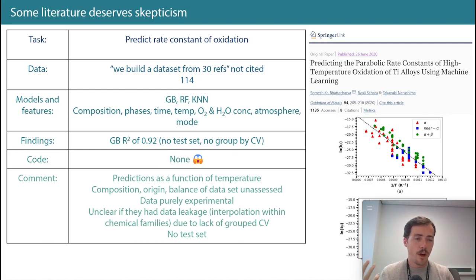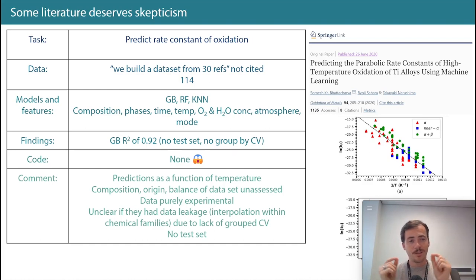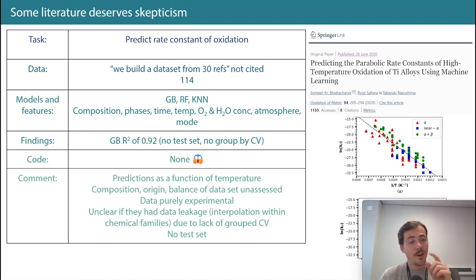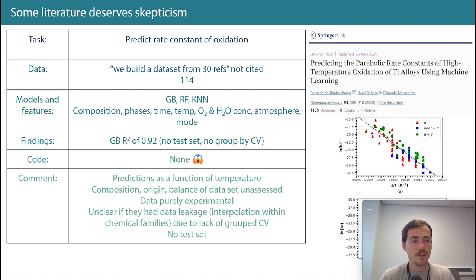That's not what we thought we were building — we thought we were building something that could take a new chemistry and a temperature and deliver heat capacity. What we were actually doing was a tight interpolation. I'm afraid that's what's happening here too — since these oxidation measurements were done as a function of temperature, they probably had sequences of data points per compound, randomly split, which is not useful at all.